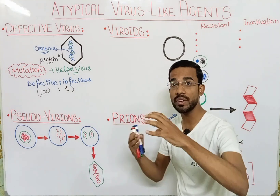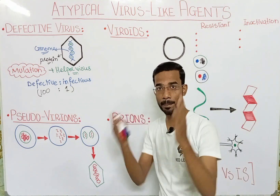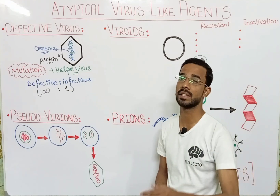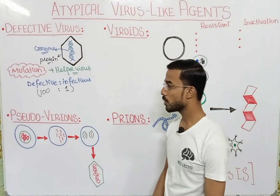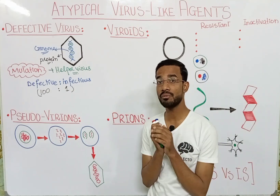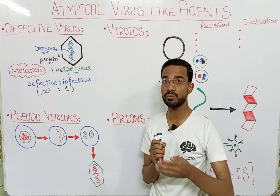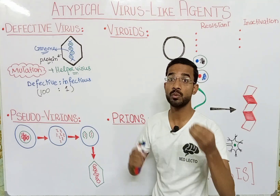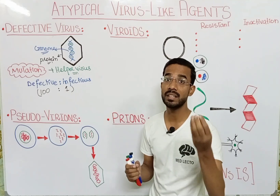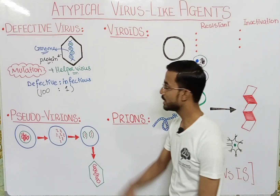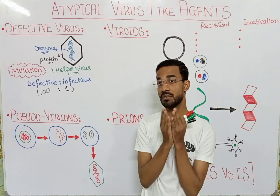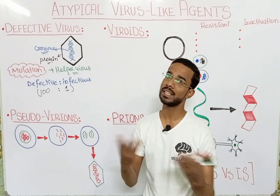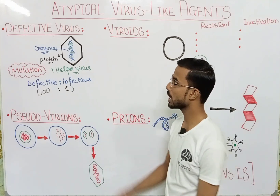Defective virus interferes in the growth or replication of the infectious virus. That's why the number of defective viruses is larger than the infectious viruses. So we can use defective viruses for the hindrance or blockage of the growth of the infectious virus. If we block the replication of the infectious virus, it means we are treating the disease caused by the infectious viruses.